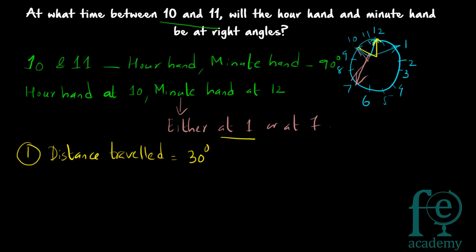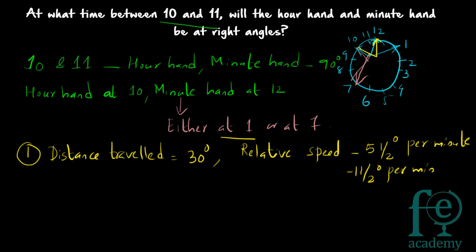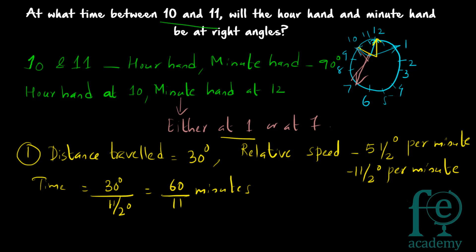Both the minute hand and the hour hand are moving, so we use relative speed. As discussed in the previous video, the relative speed is always 5½ degrees per minute, or 11/2 degrees per minute. Time equals distance divided by speed: 30° ÷ (11/2)° per minute = 60/11 minutes, which equals 5 5/11 minutes.